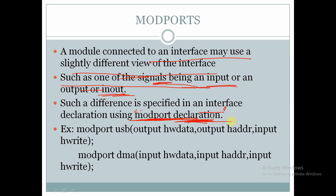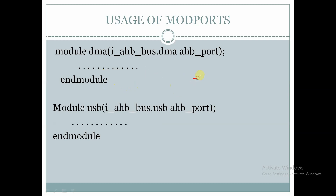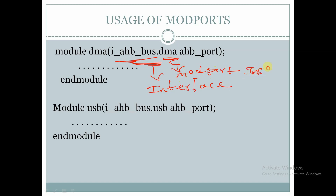We use modport declaration for giving direction to a signal. For example: modport USB — USB is the instance name of the modport — output HW_data, output H_address, and input H_write. So for USB, HW_data is output, H_address is output, and H_write is input. Again we declare for DMA: modport DMA — HW_data is input for DMA, H_address is input for DMA, and H_write is input for DMA. Here, i_hb_bus is the interface name, dot DMA — DMA is the modport instance name.